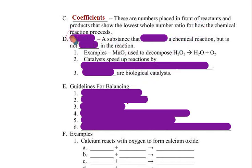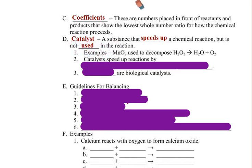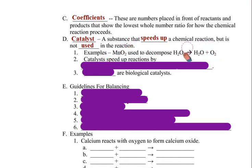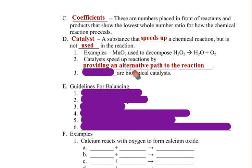A non-sequitur here: in chemical reactions you will see the use of catalysts. These are substances that speed up chemical reactions, but they're not used in the reaction. For example, manganese dioxide is used to decompose hydrogen peroxide into water and oxygen, but the manganese dioxide doesn't get used in that reaction, so it doesn't really come into the balanced equation. Catalysts speed up reactions by providing an alternative path to the reaction, which generally speeds things up.